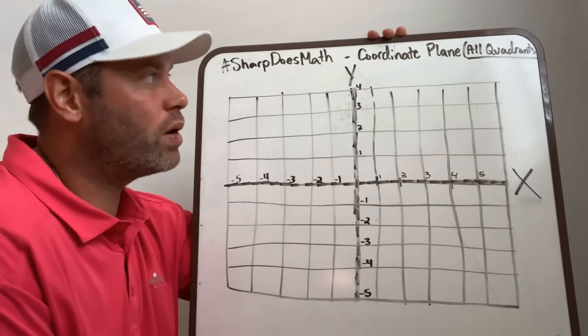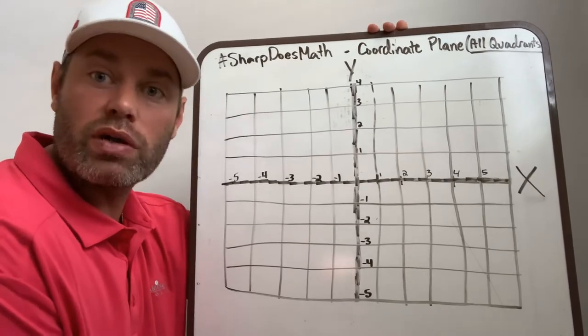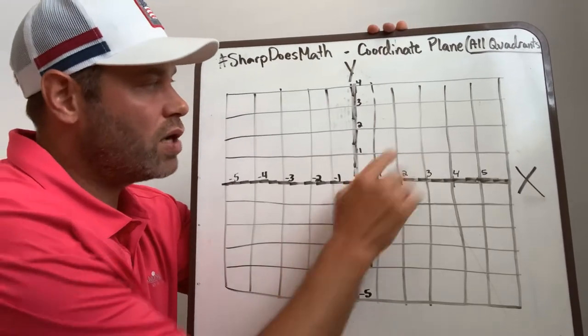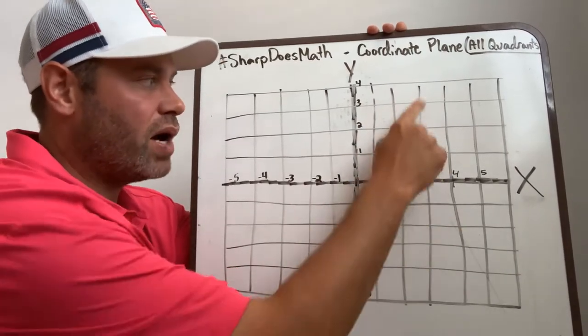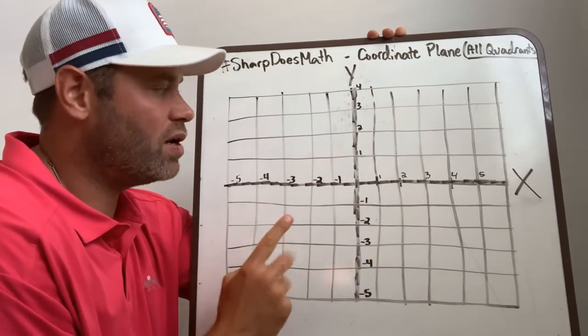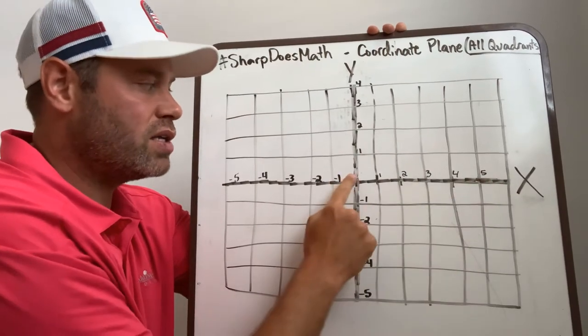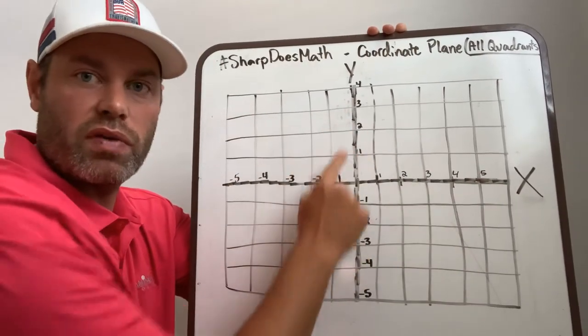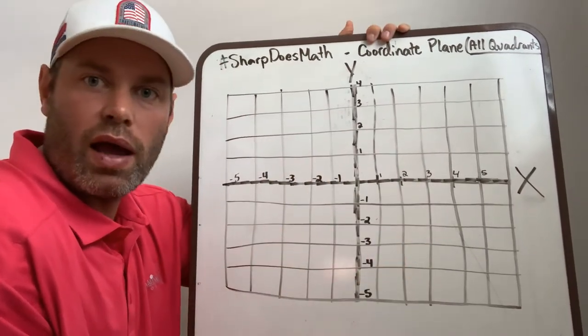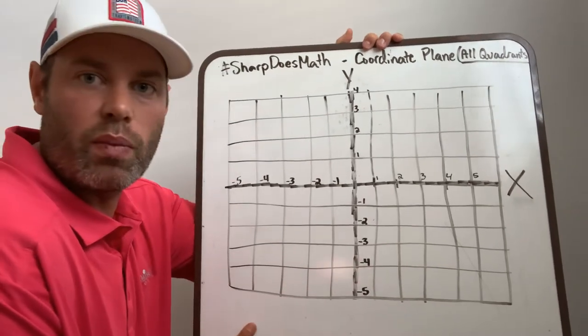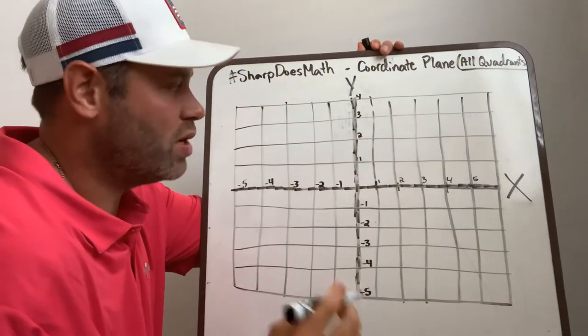Coordinate planes, all four quadrants now. We started with just quadrant one, going positive, positive from the origin. In the second video, we covered the first two quadrants with positive or negative on the x-axis and positive on the y-axis. Now we're bringing in all four quadrants, and I'm going to show you what that looks like in terms of a point in each quadrant and how you would get to it.